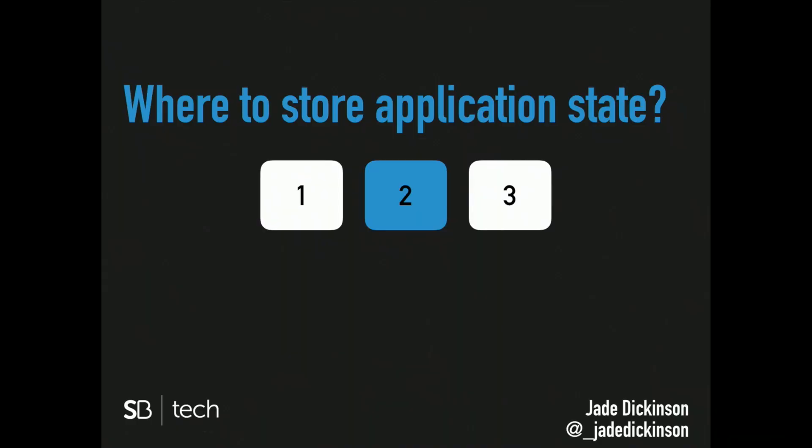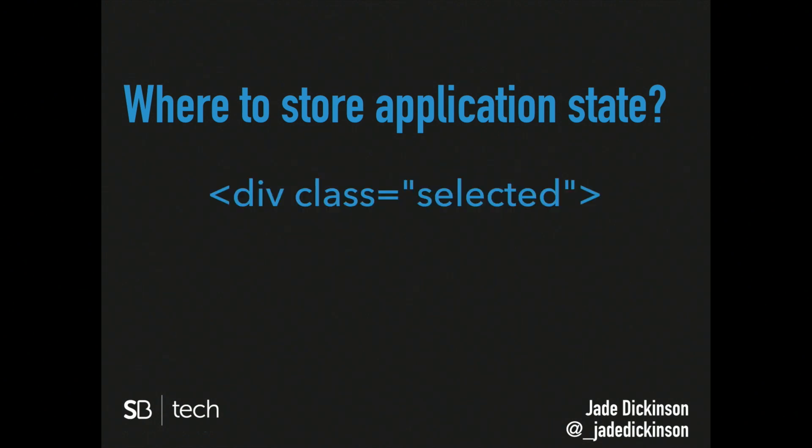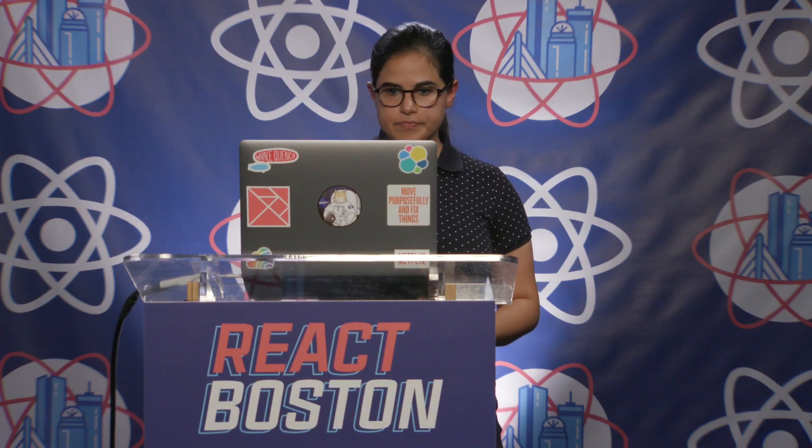Web apps all need to manage application state — for example, whether an option is selected or not. You could manage this without a framework, for example by adding classes to individual DOM elements and reading them later. But as your app grows, this will become difficult to manage. React, Redux, and Elm all have their own ways of addressing this need.